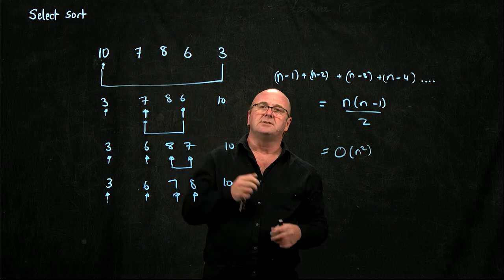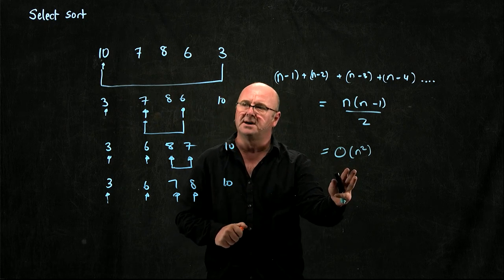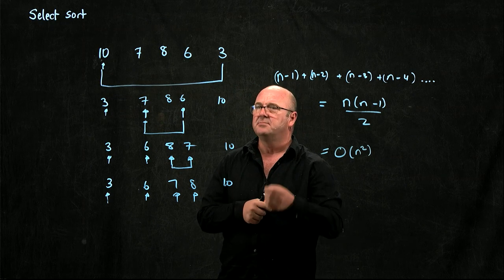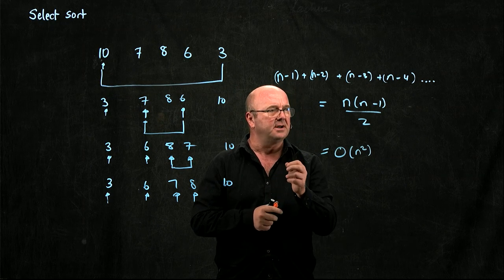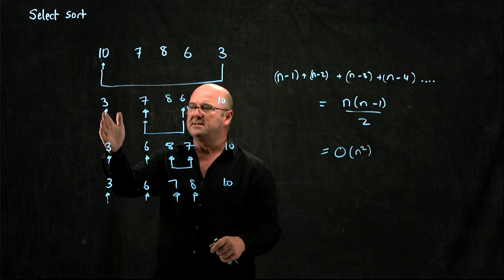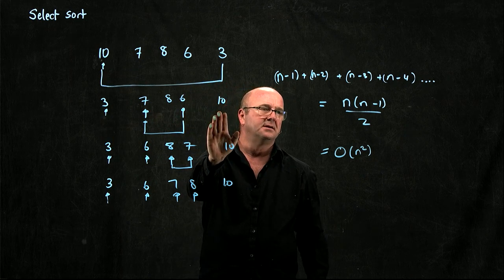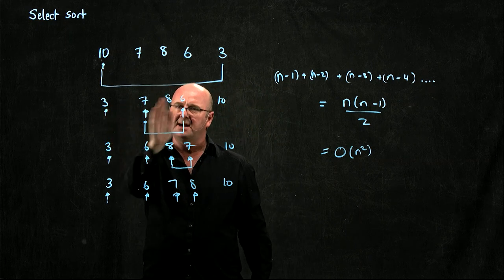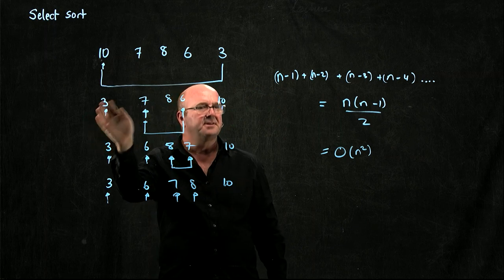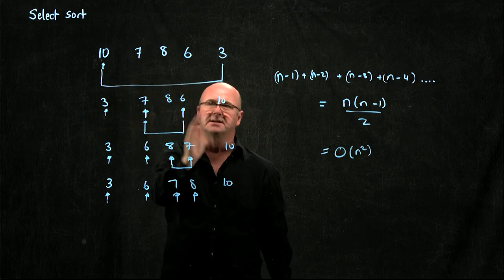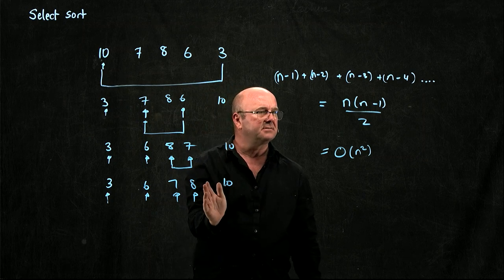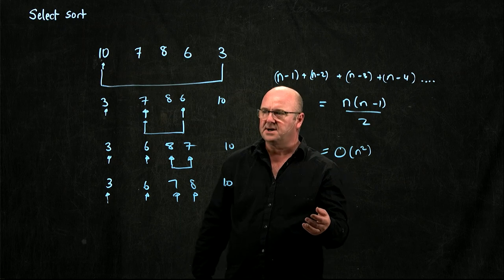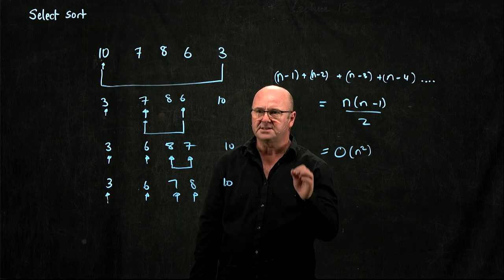So SelectSort is O(n²), and it's O(n²) in the best case, the worst case, and the average case. Because we don't know a priori where the smallest thing is. So even if our list is already sorted in the best case, we still have to go through and compare n-1 things, then n-2 things, then n-3 things, then n-4 things. So SelectSort is O(n²) best, worst, and average.